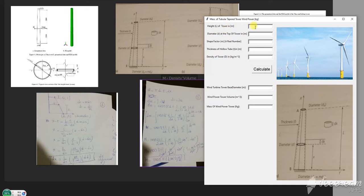With 50 meters, in this 50 meters the diameter, the top diameter is 2.37, and the thickness is 0.025, and the density is 7800 kilograms per cubic meter.